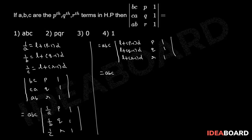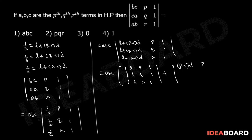This equals ABC into the sum of two determinants: the determinant of [L, P, 1; L, Q, 1; L, R, 1] plus the determinant of [(P−1)D, P, 1; (Q−1)D, Q, 1; (R−1)D, R, 1].